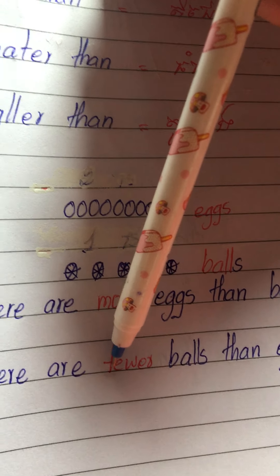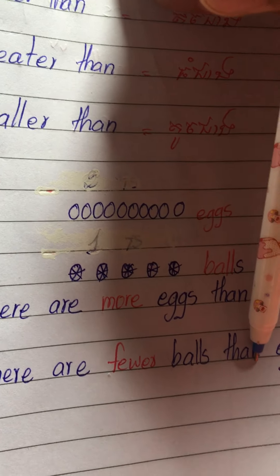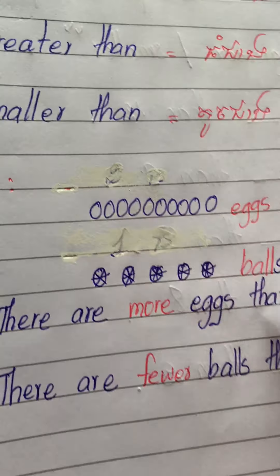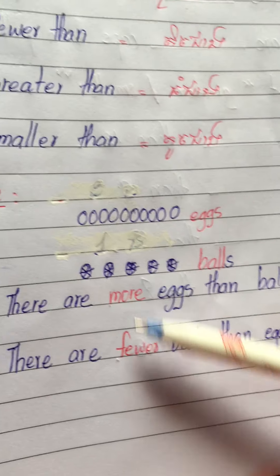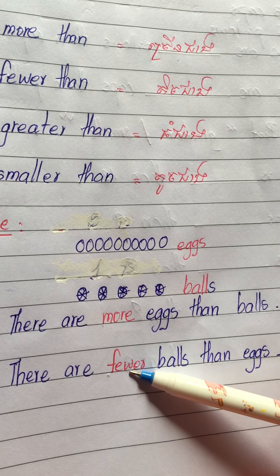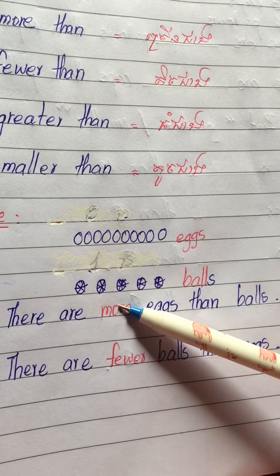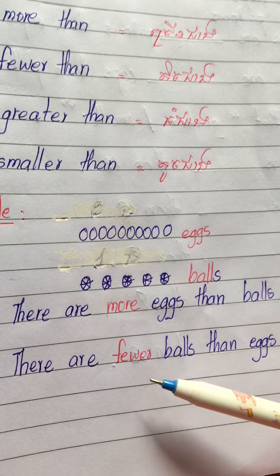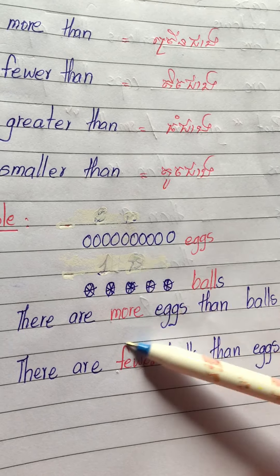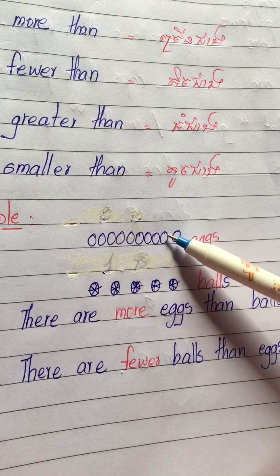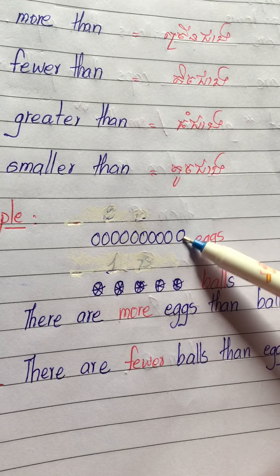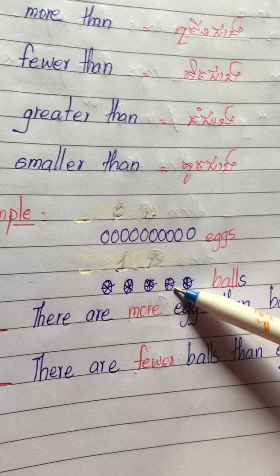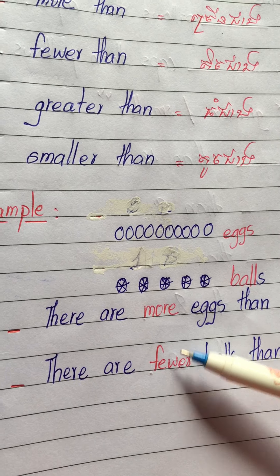We can also say there are fewer balls than eggs, because five is smaller than or less than ten. This is the way we use 'more' and 'fewer' — we compare things like the eggs and the balls: eggs are more than balls, balls are fewer than eggs.